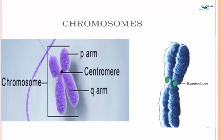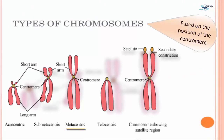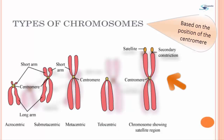Based on the position of the centromere, chromosomes can be classified into four types. Metacentric, which has a middle centromere forming two equal arms. Submetacentric, which has the centromere nearer to one end, resulting in one shorter arm and one longer arm. Acrocentric, which has the centromere situated close to its end, forming one extremely short and one very long arm. Telocentric, which has a terminal centromere.